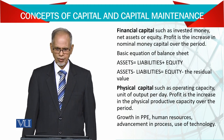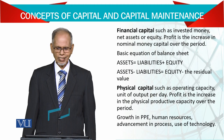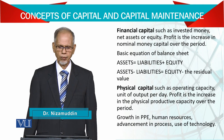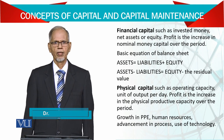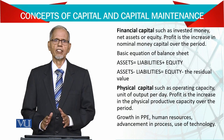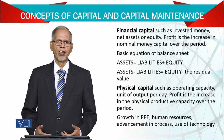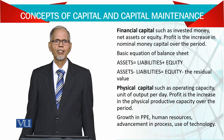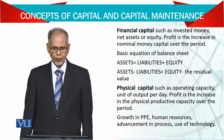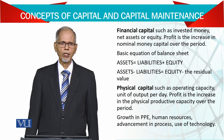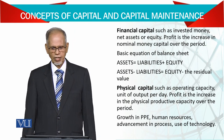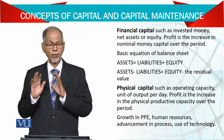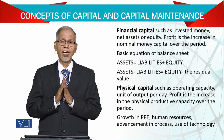Financial capital includes invested money, net assets, or equity. Profit is the increase in nominal money capital over the period. The amount we put into the business is monetary capital, which we call financial capital. Whatever money coming in and going out is the financial capital. The basic accounting equation is: assets equals liabilities plus equity, or assets minus liabilities equals equity — that is the residual value which remains for the owners. The owner is entitled to what is remaining.